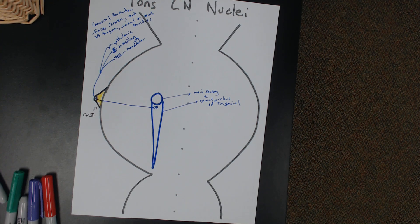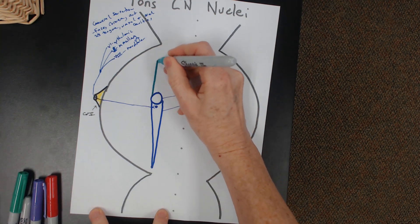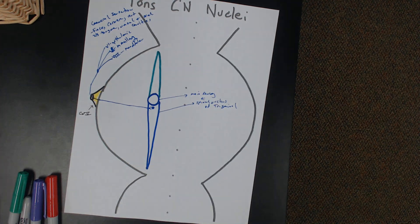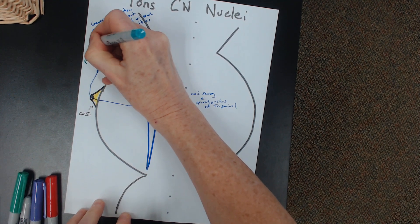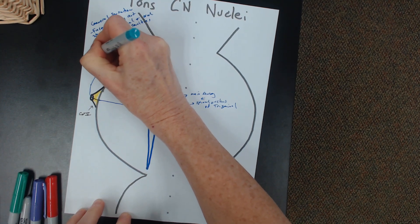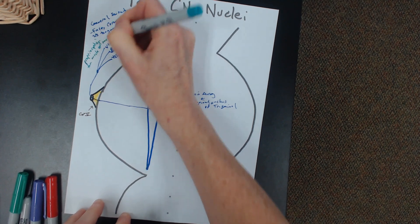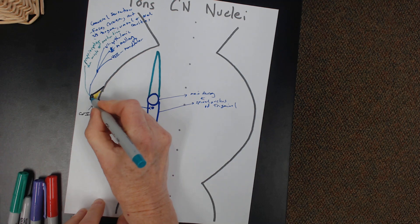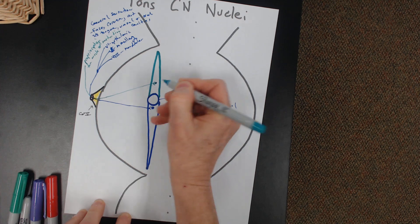Give me another function for cranial nerve number five. Proprioception — for what? Proprioception. What nucleus is it used? Mesencephalic nucleus. So here's my mesencephalic nucleus. Cranial nerve number five is receiving information about proprioception for muscles of mastication. That information travels as cranial nerve number five and synapses in the mesencephalic nucleus in the pons.